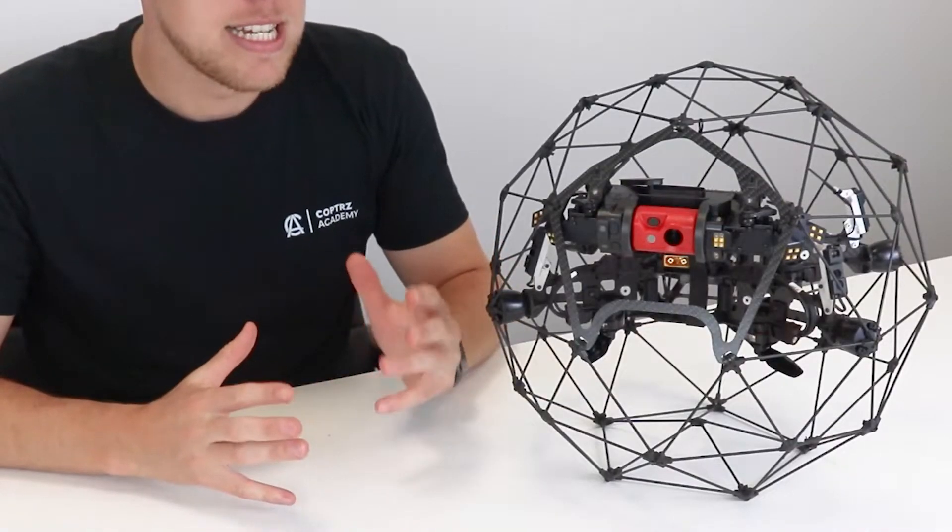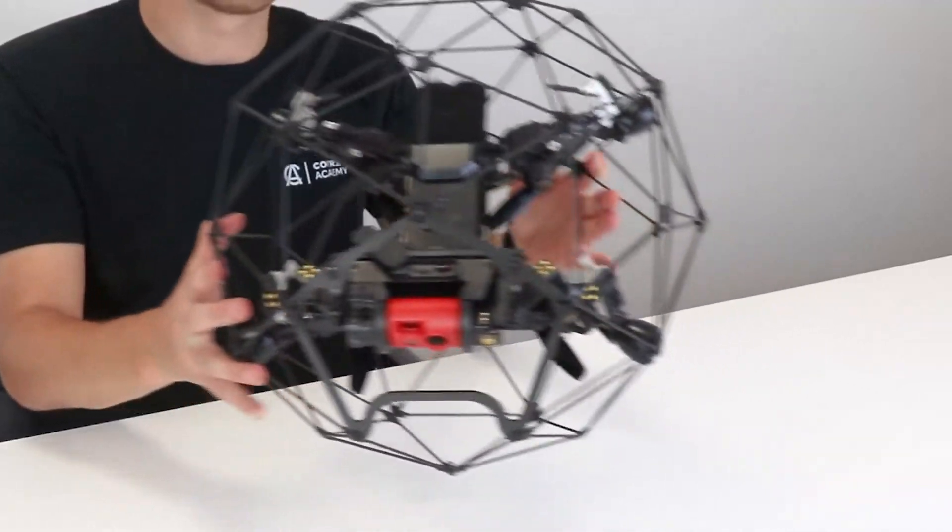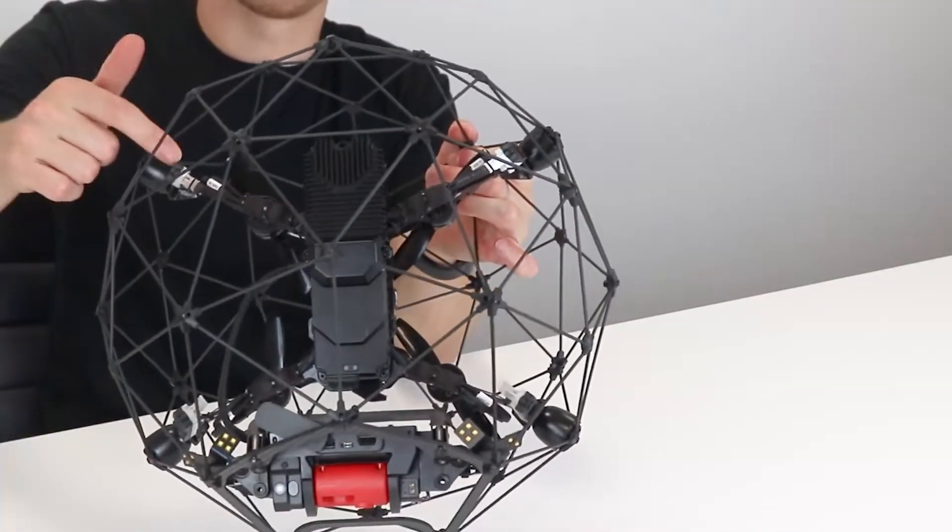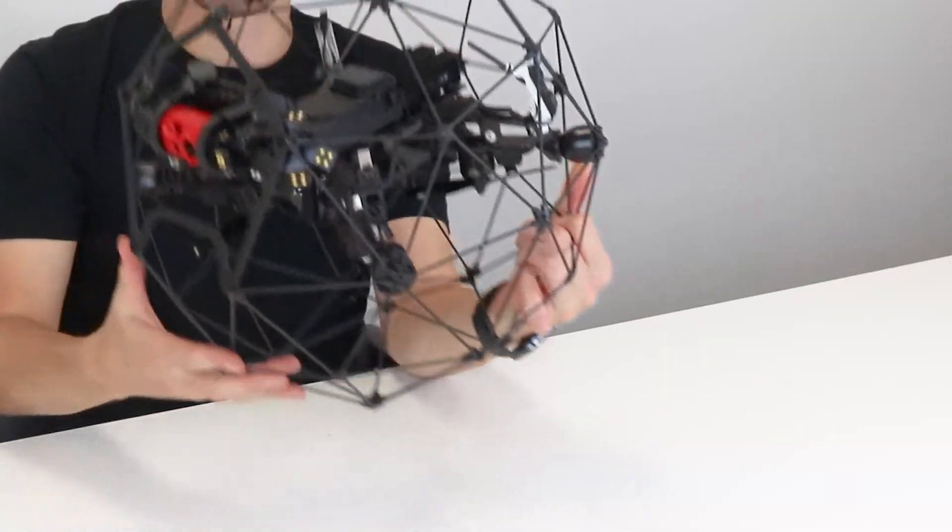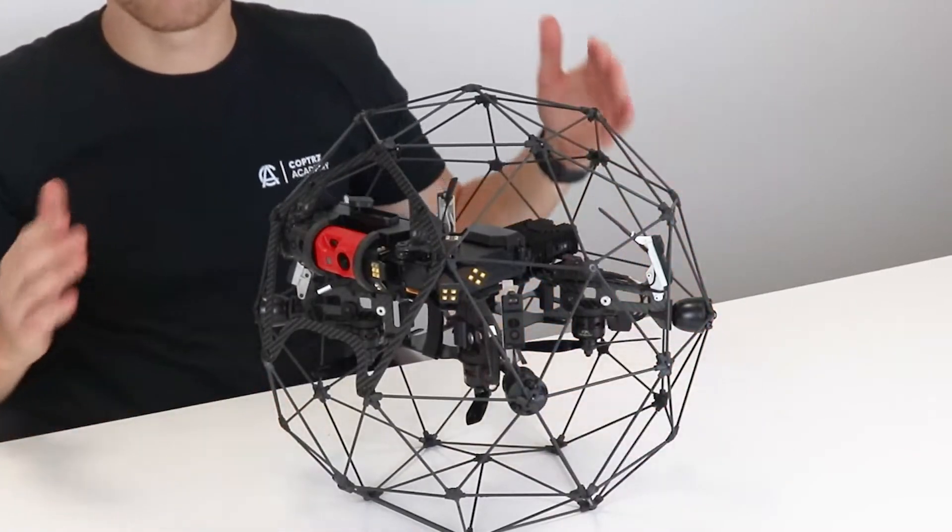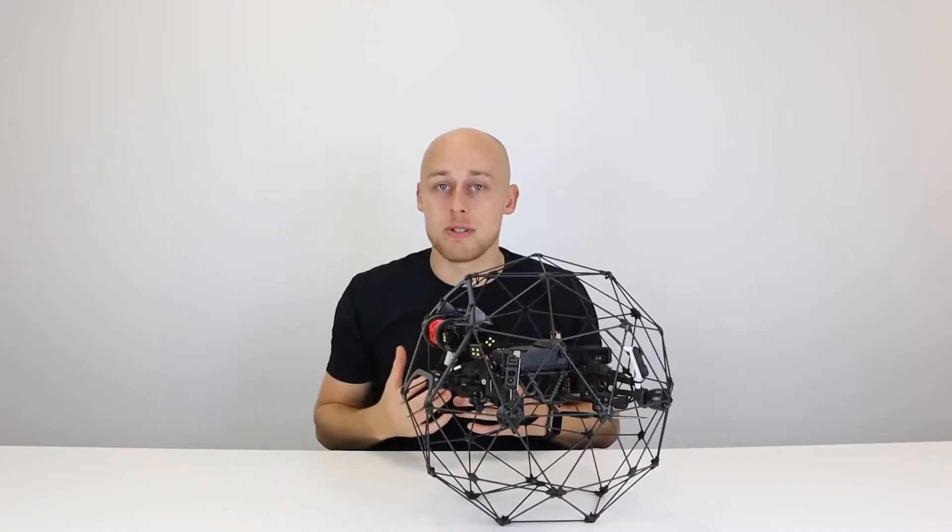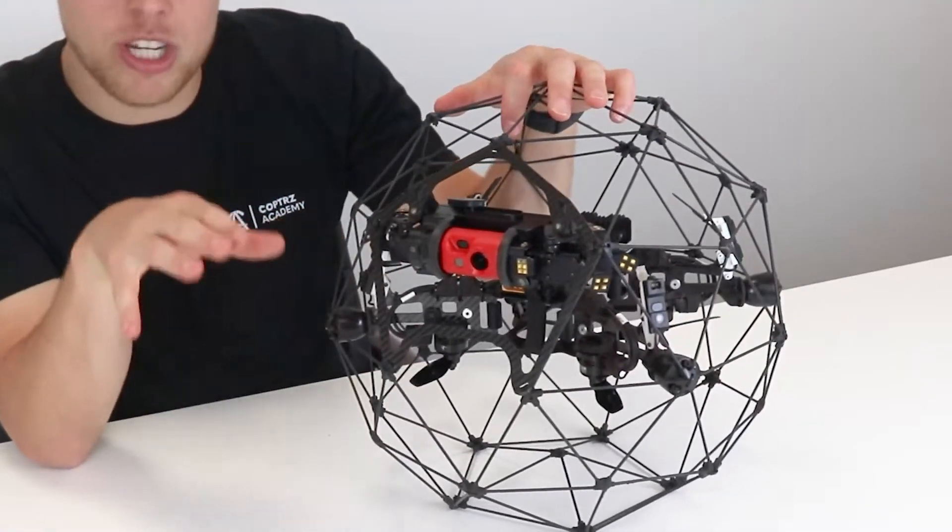One of the great things about the Elios 2 is its collision avoidance. The drone is actually made up of seven sensors around the drone. You've got four around the drone which include a measurement sensor and a light sensor. We also have one on the top, one on the front, and one looking down.